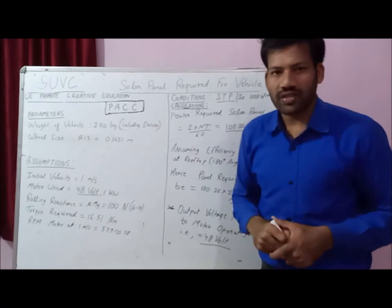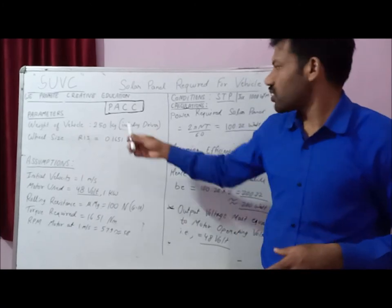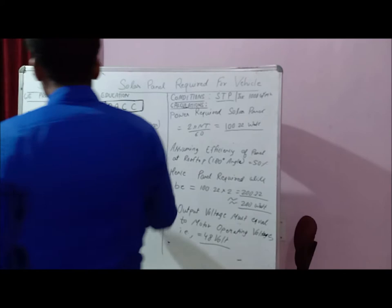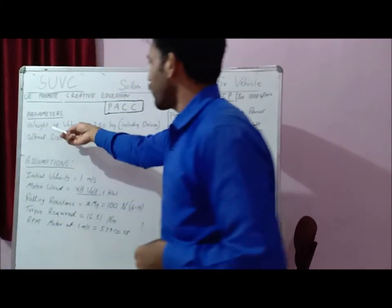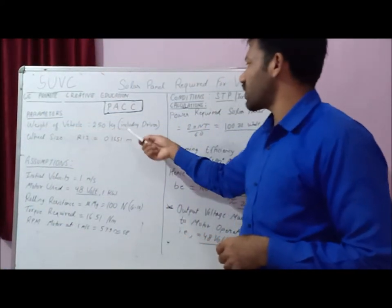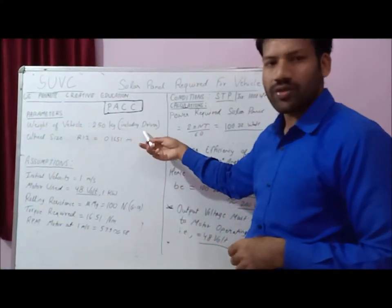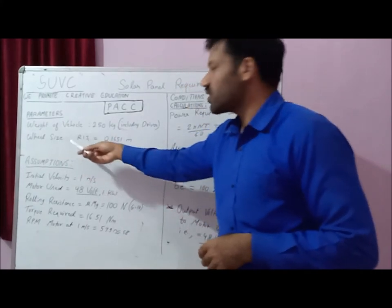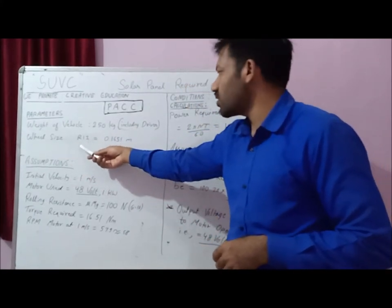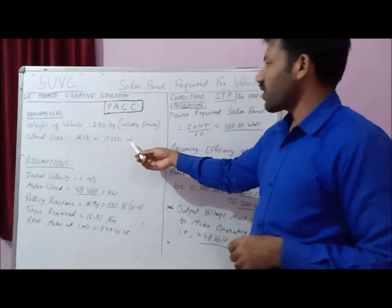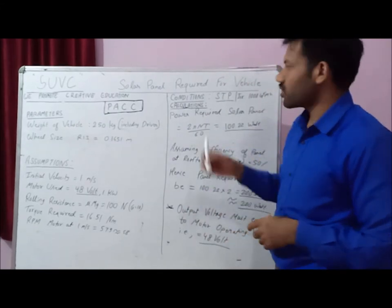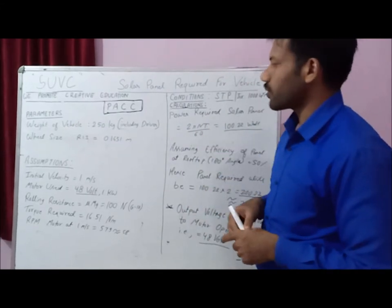We start with the first step: Parameters. The parameters are: first, the weight of your vehicle should not exceed 250 kg including the driver and wheel; and second, the transmission wheel size should be 0.1651 meters. These are the parameters chosen for the solar endurance round.